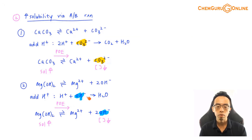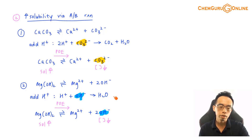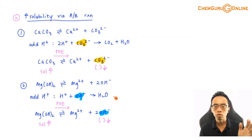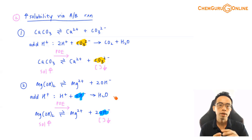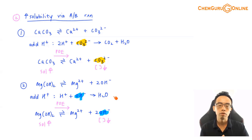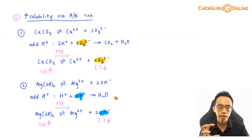To summarise: the common ion effect suppresses solubility by increasing product concentration and shifting equilibrium left, so less salt dissolves. But we also need to increase solubility to truly manipulate a system. We can do this in two ways: complex ion formation, which removes the metal cation and favours the forward reaction; and acid-base reaction, which removes the anion and also shifts equilibrium to the right, increasing the solubility of the salt.